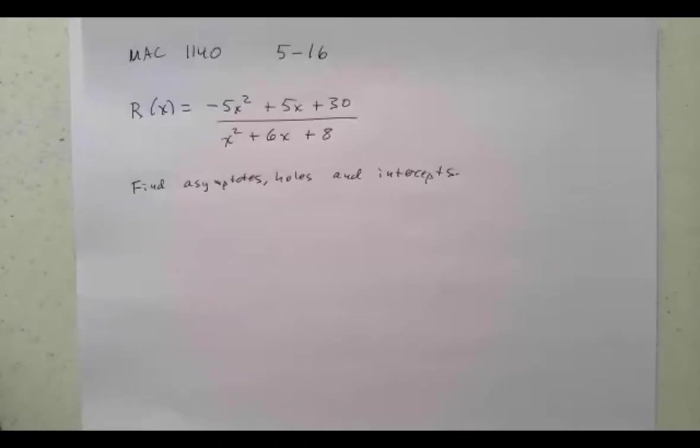For this question, we're given the rational function r(x) equals negative 5x squared plus 5x plus 30, over x squared plus 6x plus 8. We want to find any asymptotes, holes, and intercepts.